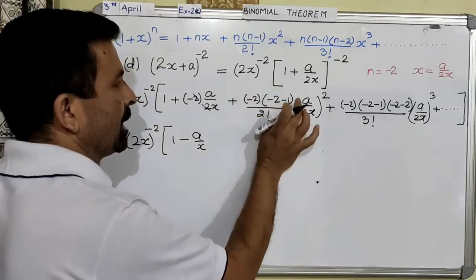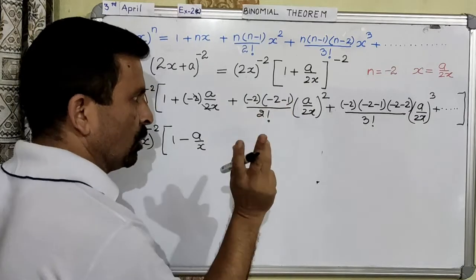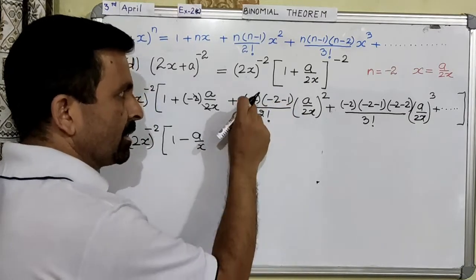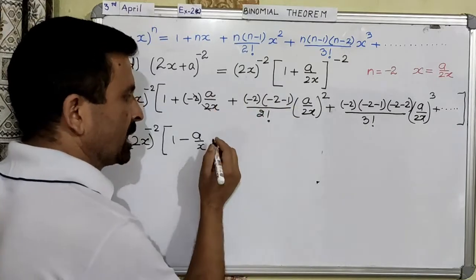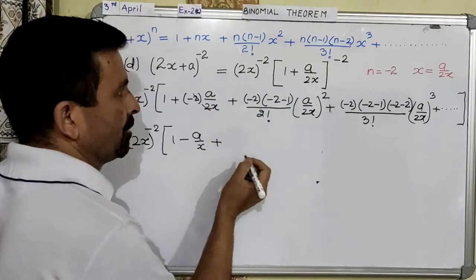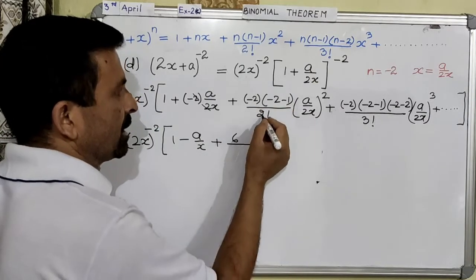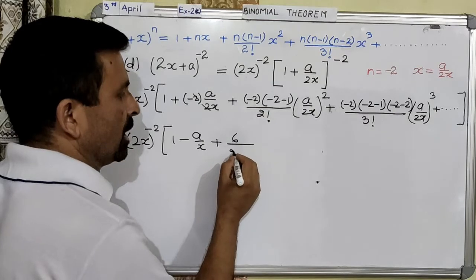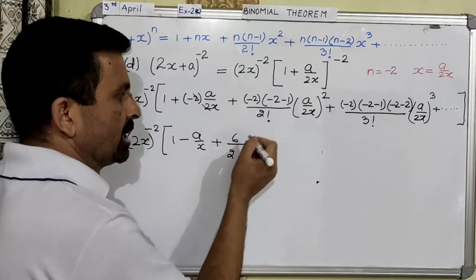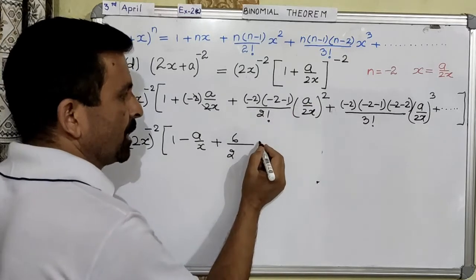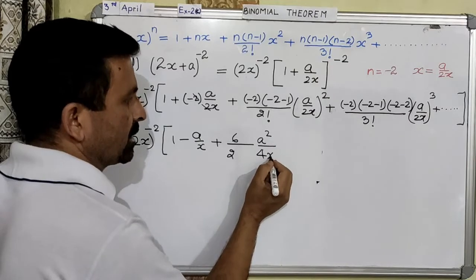Now from this part, total number of negative quantities is 2 — because minus 2 times minus 1 will become minus 3, and this is minus 2 — so overall there are 2 negative quantities, therefore the result will be positive. This is 3 times 2, so this is 6 in the numerator. Denominator: factorial 2 written as product is 2 into 1, which is 2. And this is a squared, down in the denominator will become 4x squared.